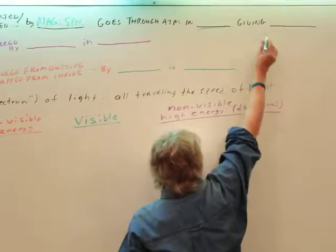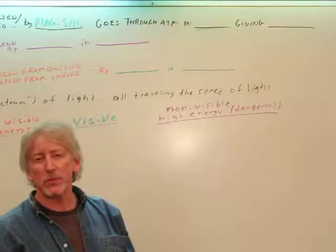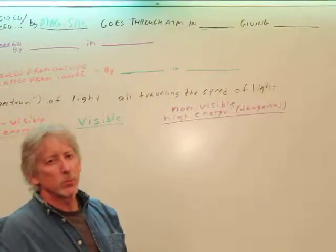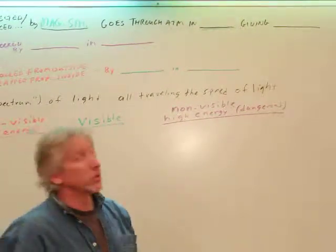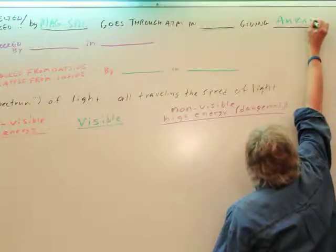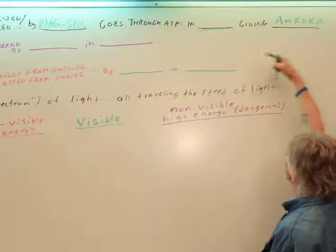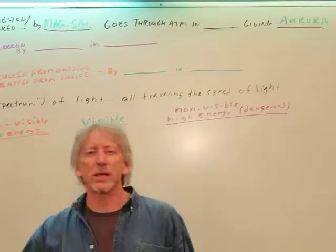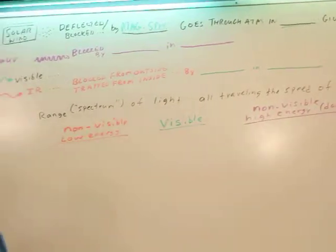And it goes through our atmosphere. In what layer? We'll see that in a moment. And as it goes through our atmosphere, what does it give us? Beautiful lights that are called the aurora. So where does that happen? Where do those lights happen? We'll take a look in just a moment.